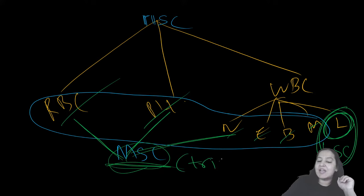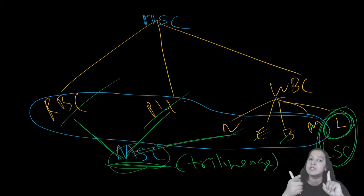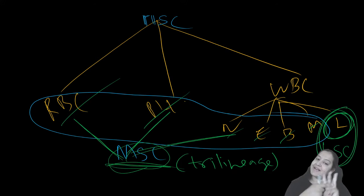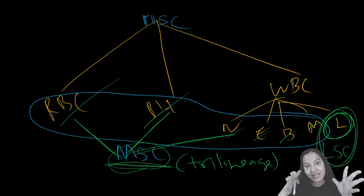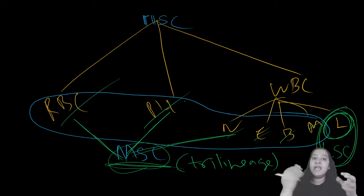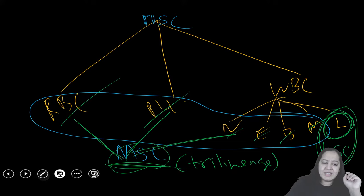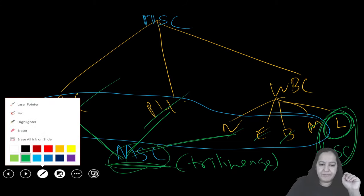Myeloid stem cell is trilineage because it is forming three lineages: RBCs, platelets, and all WBCs except lymphocytes. You should understand the two series - lymphoid series and myeloid series. In lymphoid series, only lymphocytes are formed. In myeloid series, all remaining WBCs except lymphocytes, all RBCs, and all platelets are formed. So myeloid series is trilineage and lymphoid series is more linear, forming only lymphocytes.